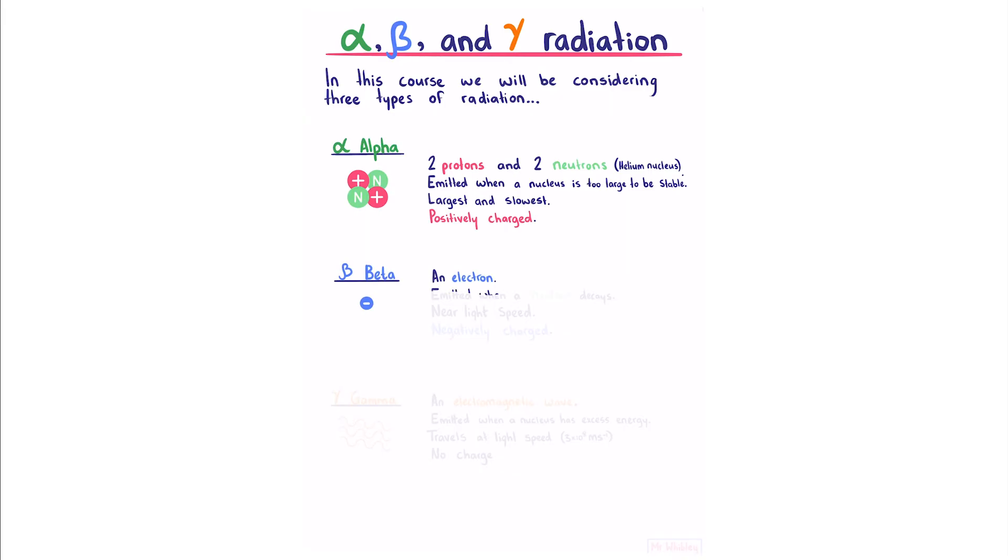Beta radiation is an electron, which is emitted when a neutron decays. They travel near the speed of light. And since it's an electron, it's negatively charged. Gamma radiation is an electromagnetic wave. It's emitted when a nucleus has excess energy. Travels at the speed of light, 3 times 10 to the 8 meters per second, and has no charge.